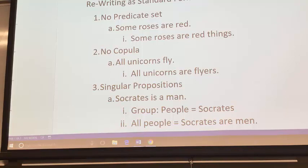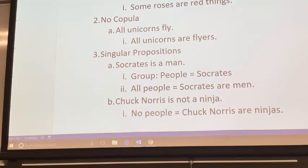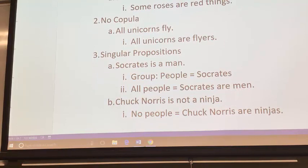Those are pretty trivial. One that gets kind of strange is if we have what's called singular propositions. A singular proposition is about an individual — a person or thing — rather than about a group. So if you have a statement like 'Socrates is a man,' that's not about a group of things; that's about one person, Socrates. Actually, the original categorical syllogism in Aristotle used names like that instead of just groups. But now we think of it as standard form with group to group.